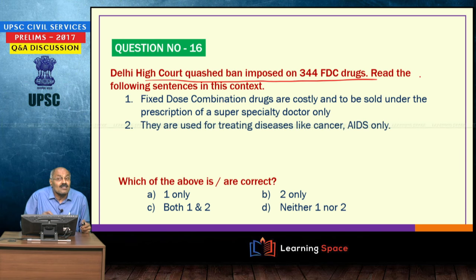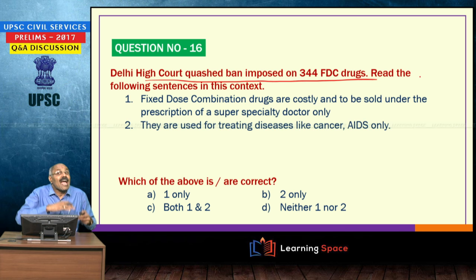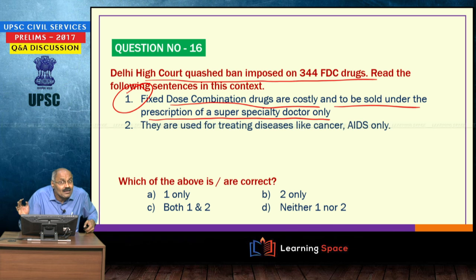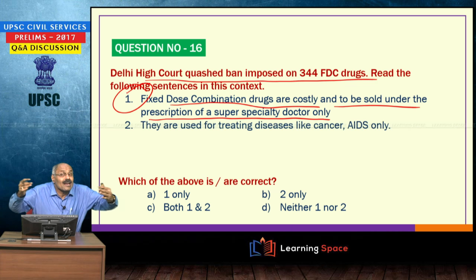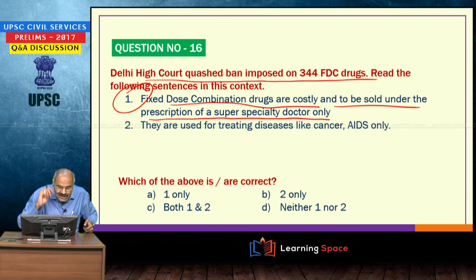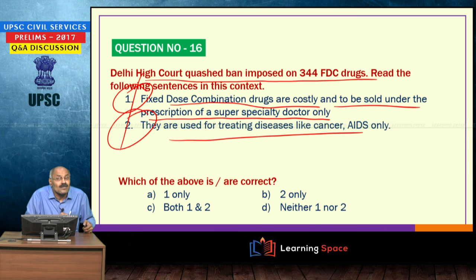Delhi High Court struck down a ban imposed on 344 fixed dose combination drugs. Examples include Corex cough syrup and Crocin Action 500. Fixed dose combination drugs are not costly — they are just like any other medicine, combining two or three formulations. The government banned them citing side effects and lack of proper approvals. The claim that they are only used for treating cancer or AIDS is also wrong. Both statements given are incorrect.